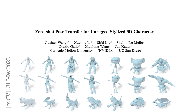This research paper introduces a novel approach to transferring poses from a reference avatar onto stylized 3D characters, eliminating the need for manual rigging or explicit correspondences. The proposed model combines the benefits of learning-based methods and classical mesh deformation techniques, allowing for zero-shot pose transfer between significantly different shapes.